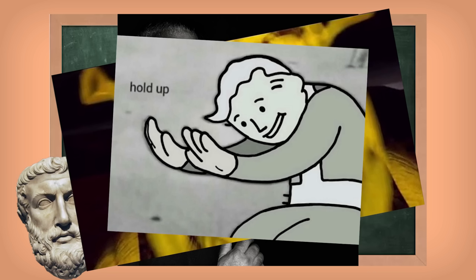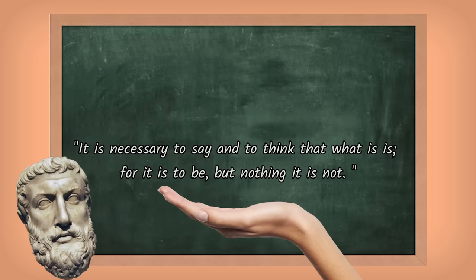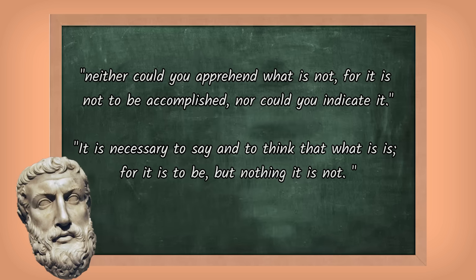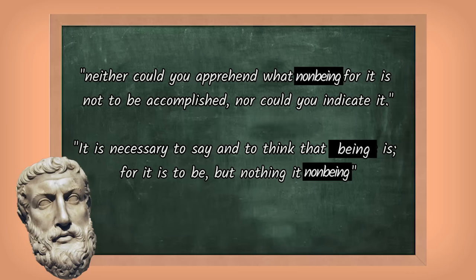But wait, hold on. It's not as obvious as it sounds. A bit earlier, he also said: 'Neither could you apprehend what is not. For it is not to be accomplished, nor could you indicate it.' First, to make it easy on the grammar, let's call what is, a being. And nothing, or what is not, a non-being.